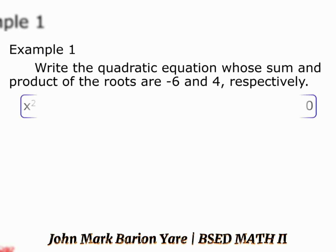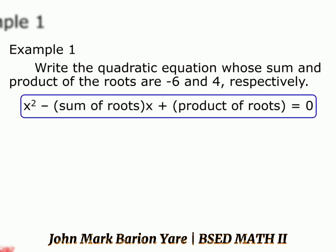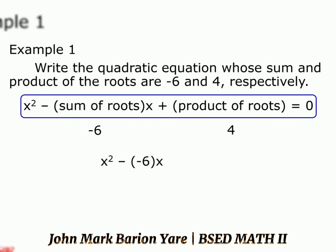We have x squared minus the sum of roots times x plus the product of roots equals 0. In this example, the sum of the roots is negative 6 and the product of the roots is positive 4. So we have x squared minus negative 6 times x plus 4 equals 0.